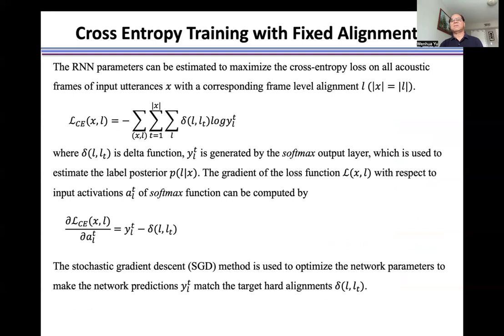Where delta is the delta function, y_t^l is generated by the softmax output layer, which is used to estimate the label posterior p(l_t|x_t).